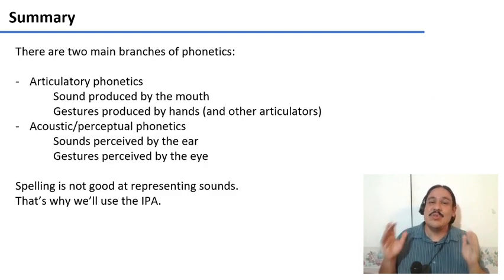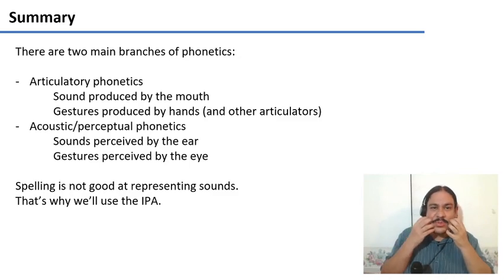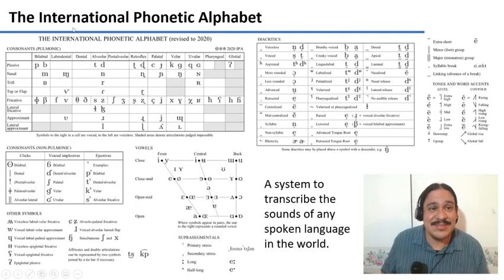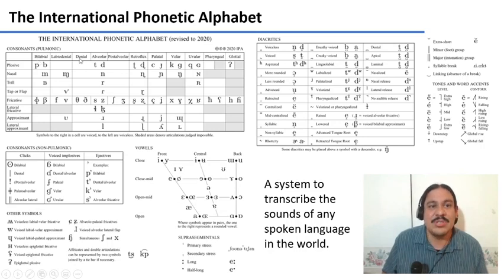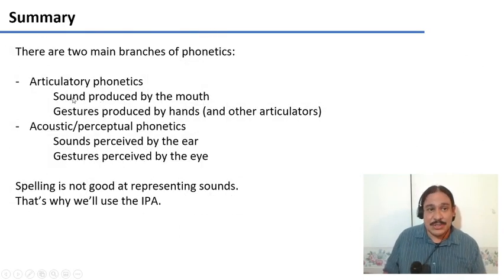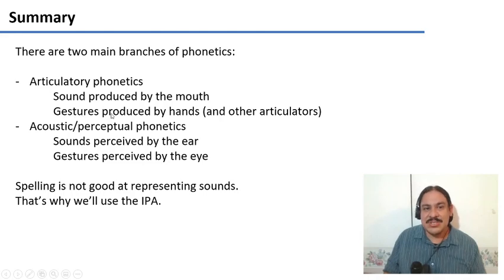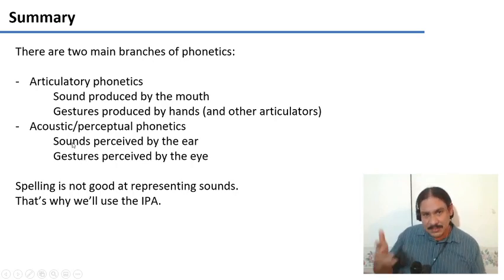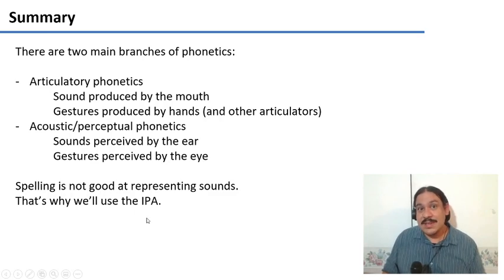In summary, there are two main branches of phonetics. Articulatory phonetics studies how sound is produced by your mouth. We love the International Phonetic Alphabet, or IPA, because it has to do with articulation — what sounds are produced by your lips (labial), by your teeth (dental), by your uvula on the back of your throat. The IPA is a great tool to describe articulatory phonetics, and we'll also study how gestures are produced by hands. The other branch is acoustic or perceptual phonetics — how sounds and gestures are perceived by your ear or your eyes. Spelling is not a good guide to sounds, so we will be using the IPA. In the next video, we will start looking at it.